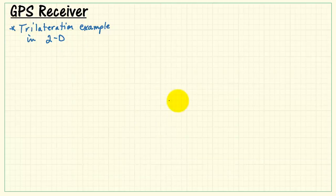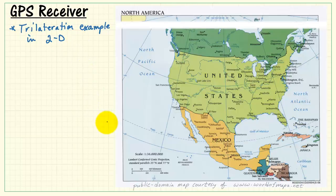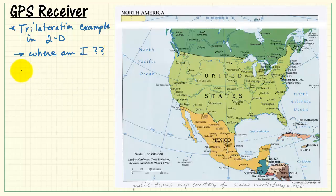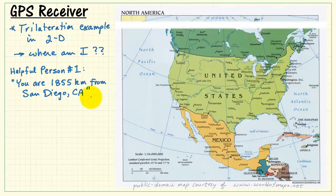Trilateration is most easily understood from a two-dimensional example with a map, and then we can promote that to three dimensions in a moment. Now you have a map, you know you're somewhere on the map, but you have no idea where. Imagine that a helpful person approaches you and says, you are 1855 kilometers from San Diego, California. You look to your map, find San Diego, trace out a circle of radius 1855 kilometers, and now you know that you're anywhere on this circle. Could be out in the ocean, could be in Mexico, anywhere.